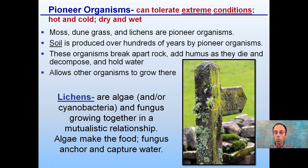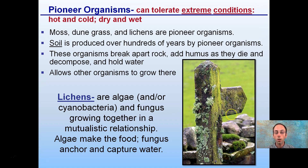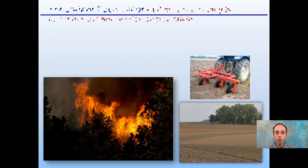We see old rock with some lichens growing on it. Lichens are algae or cyanobacteria and a fungus growing together in a mutualistic relationship. The algae make food by capturing sunlight, while the fungus anchors and captures water. So it's a symbiotic relationship with those lichens.